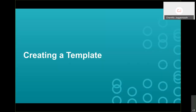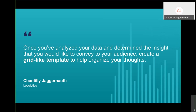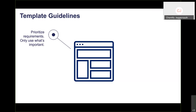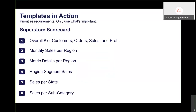Next, let's talk about creating a template. Once you've analyzed your data and determined the insight to convey, create a grid-like template to organize your thoughts. First, prioritize your requirements and only use what's important — we can't have a million worksheets on a dashboard. For the Superstore use case, we've listed requirements in order of priority: overall KPIs (customers, orders, sales, profit), then monthly sales per region, metric details per region, region segment sales, sales per state, and sales per subcategory.